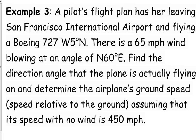So the flight plan has this pilot leaving San Francisco International Airport flying west 5 degrees north. There's a 65 mile per hour wind blowing at an angle of north 60 degrees east. We want to find the direction angle that the plane is actually flying on and determine the airplane's ground speed assuming that the speed with no wind is 450 miles per hour.